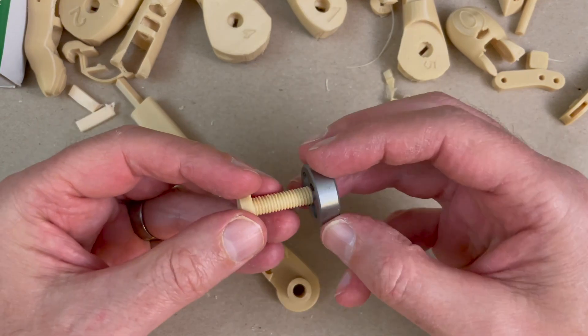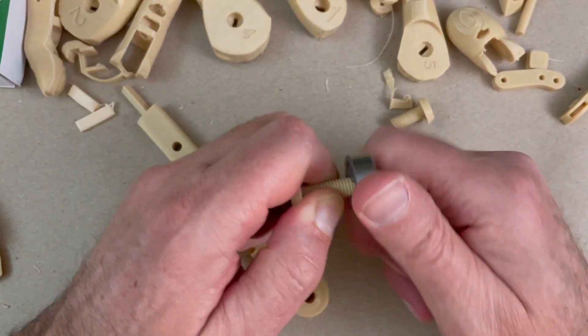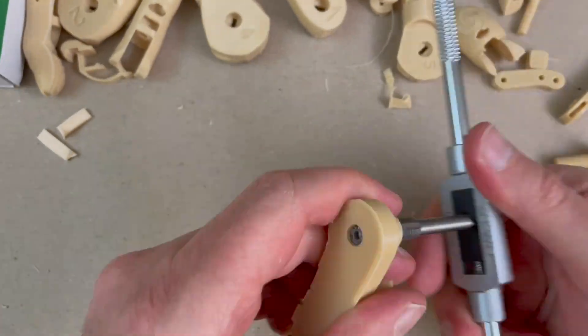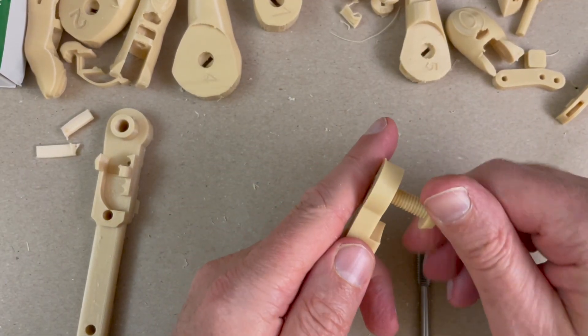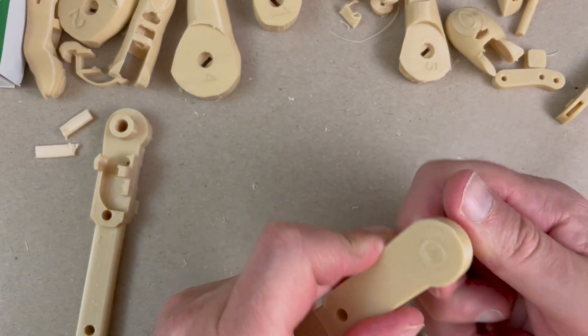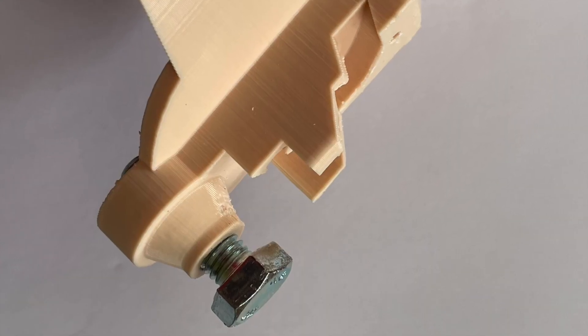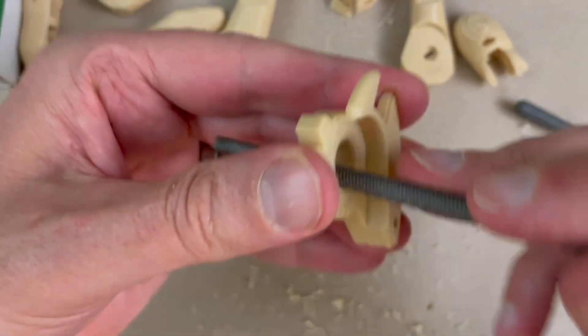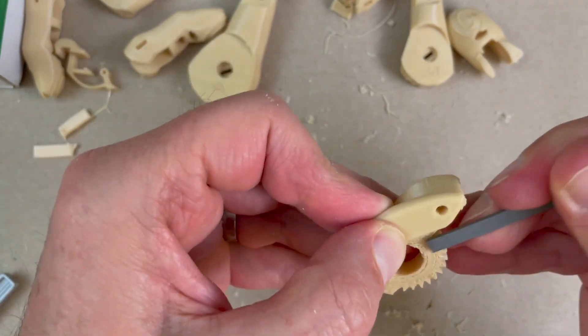Again, I'm going to use the tap and die on the elbow bolts as well. I like to use the 3D printed elbow bolts. I think they work fine. So I'll use the tap and die on those as well. You can use a regular bolt if you want to clean the threads.